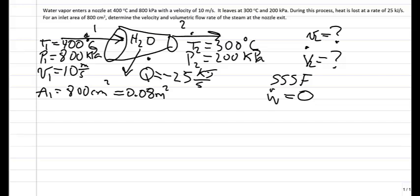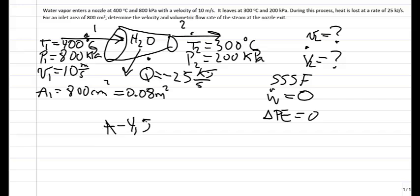There is no information given about the height of the nozzle, and we assume the inlet and exit are at the same elevation, so there is no change in potential energy — delta PE equals zero. We are dealing with steam, so our data will come from tables A4, A5, and A6. The inlet is water vapor at 400 degrees Celsius and 800 kilopascal, so that will clearly be table A6 for superheated steam.